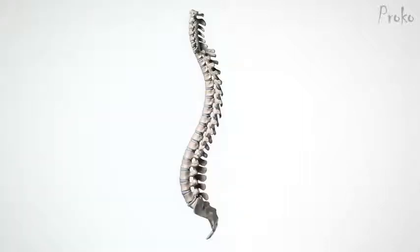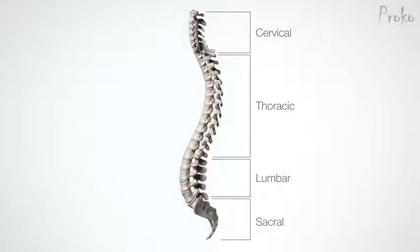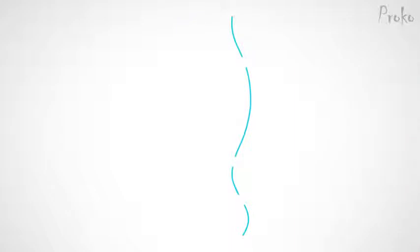There are four sections to the spine. The cervical section of the neck consists of 7 vertebrae. The thoracic section of the ribcage has 12 vertebrae, one for each rib. The lumbar section of the lower back has 5 vertebrae. The fourth section combines the sacrum and coccyx, which is the tailbone. The sections give the spine a 4-arch curve. If the spine were a straight line it would be strong but rigid. This 4-arch curve gives better flexibility for shock absorption, aids in balance, and is the framework for the posture of the body.